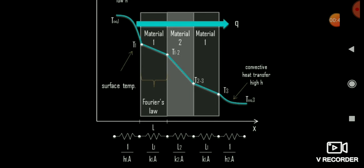Here, three materials are given: material 1, material 2, and material 1 again — they are in contact with each other. The surface temperature T1 is given on the left side and T3 on the right side. From the left, material 1 is in contact with the surrounding fluid at temperature T1, and from the rightmost side the temperature is T3.